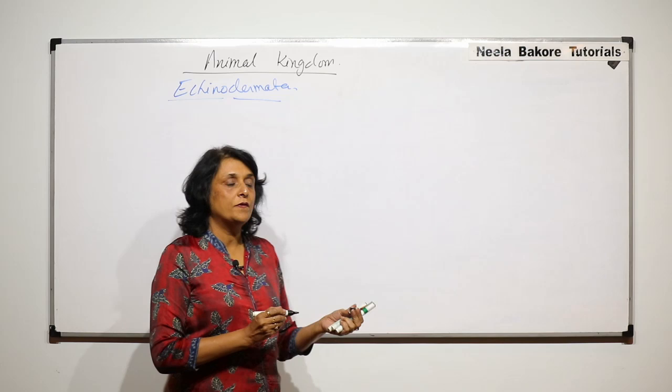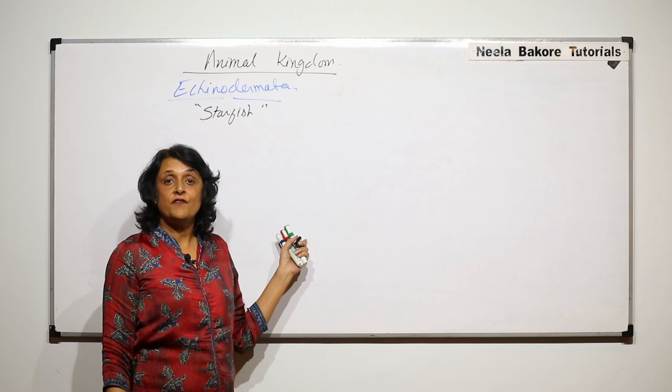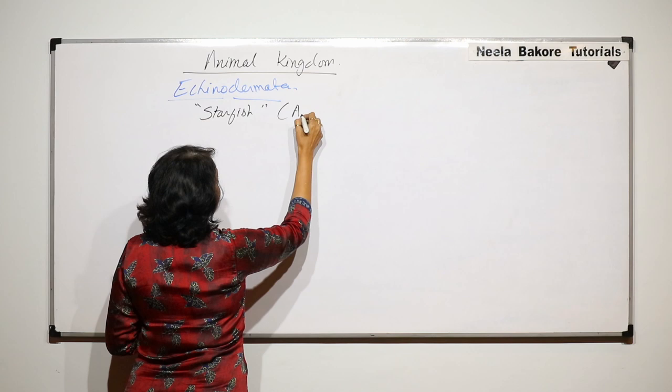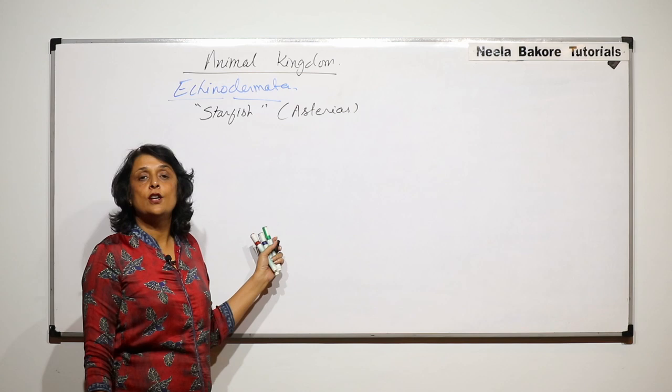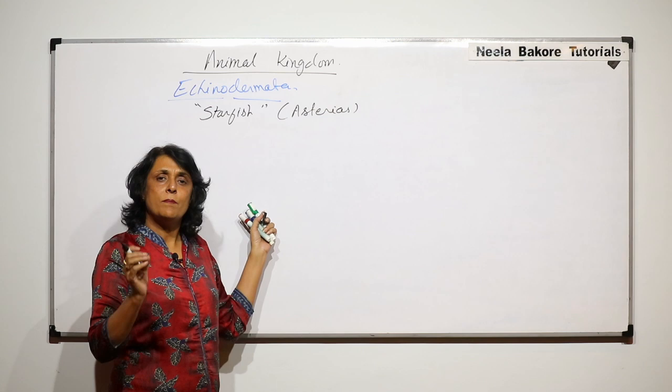In this part we will take an example of phylum Echinodermata. These animals are commonly called starfishes. The name starfish is given because of the shape, but its scientific name is Asterias. It looks like a star and that is why this name. Before drawing the structure and understanding the details, we will write about some basic characteristic features.